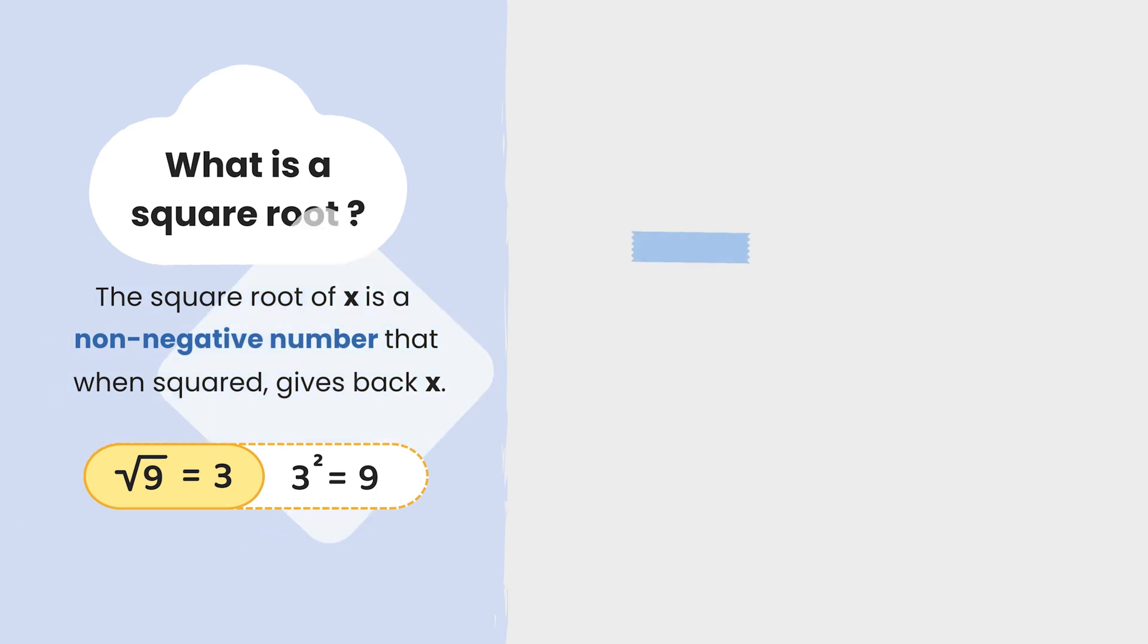That's because by definition, square roots are non-negative. So whenever you see this tick-like sign, you should associate it with a non-negative number.